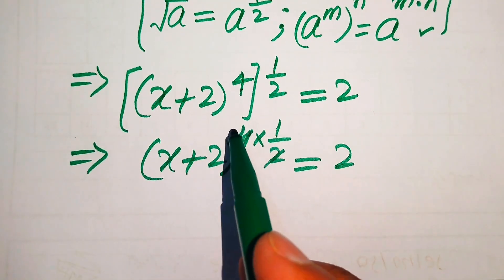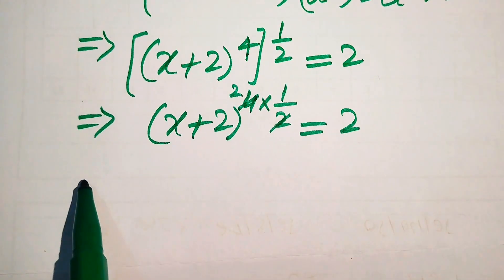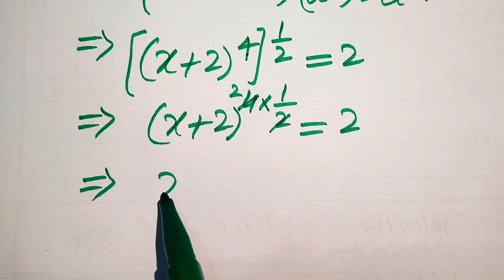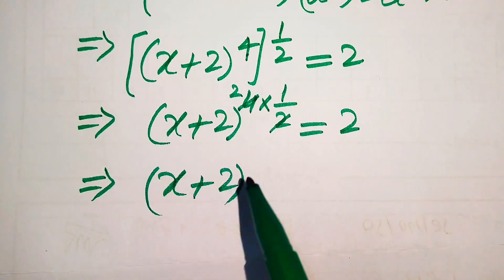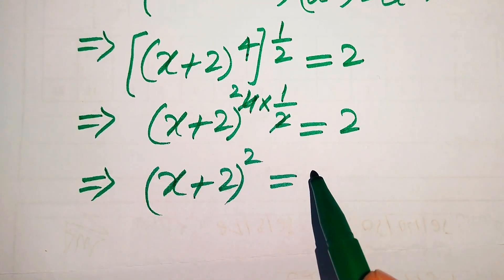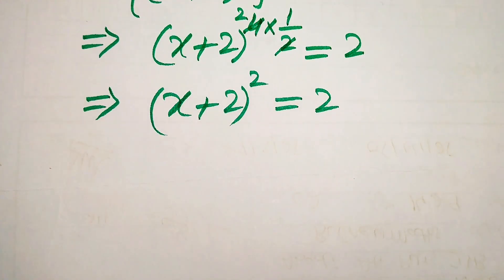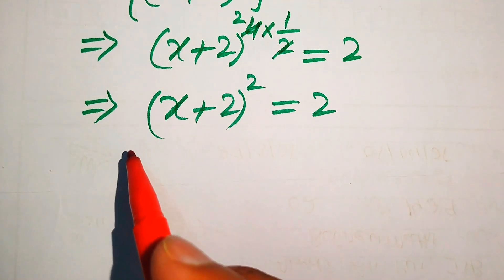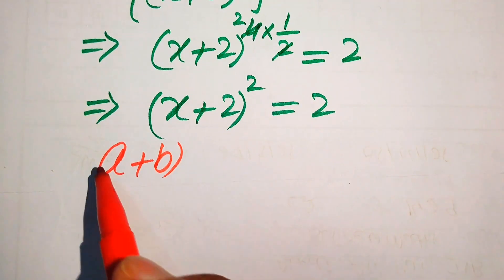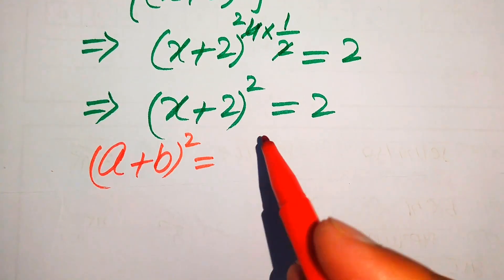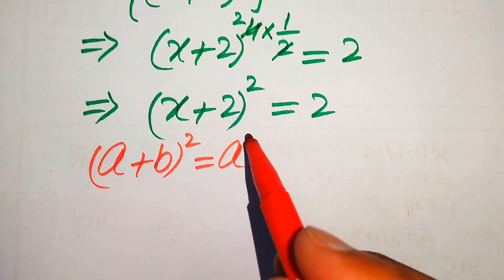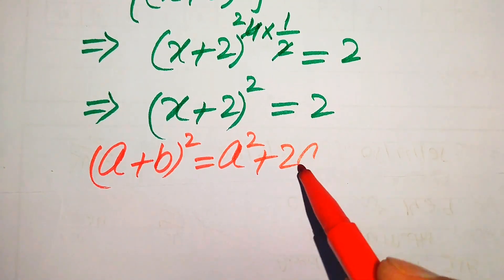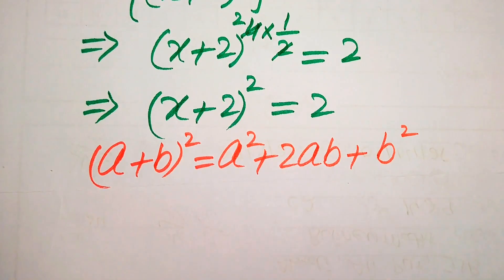You see these cancel out — 4 times 1/2 gives 2 — and we get (x+2)^2 equals 2. Now we apply the algebraic formula into the left-hand side. We know that (a+b)^2 equals a^2 plus 2ab plus b^2.